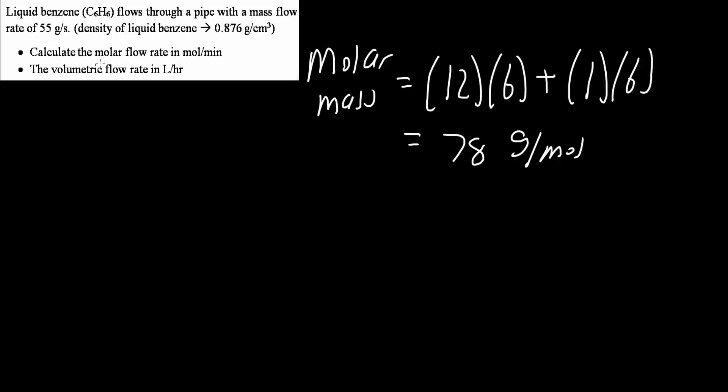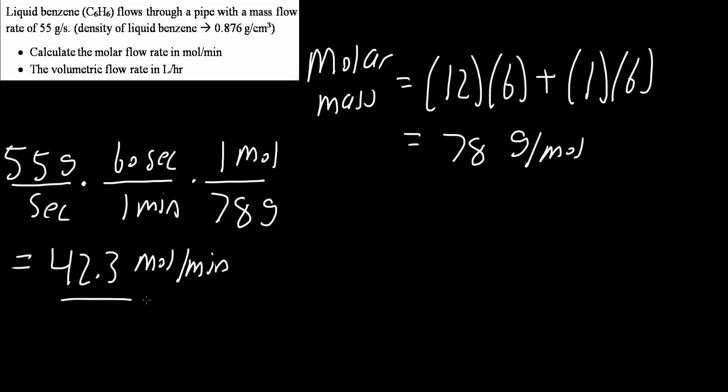Now we will calculate the molar flow rate. We have 55 grams per second. We know that 60 seconds is in 1 minute, so now we have the minute. Lastly, we need to get moles. Based on the molar mass, 78 grams equals 1 mole for benzene. If we multiply everything out, we get 42.3 moles per minute. This is the first answer.